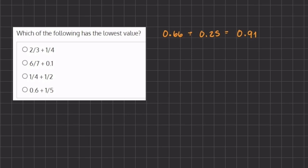Our second expression, six divided by seven in decimal form is 0.86 plus 0.1, which gives us 0.96.